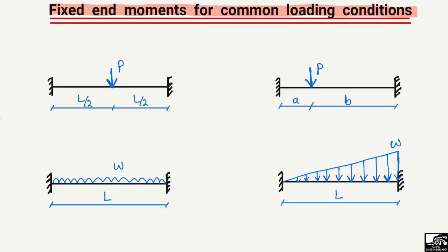Starting with this beam where the point load P is acting at the center of the beam — the load is acting at L/2 from one end and also L/2 from the other end. It is only a point load acting, and both supports are fixed supports. We can directly find the moments by this equation: M is equal to PL/8. We cannot use equilibrium equations because of the indeterminacy of these beams.